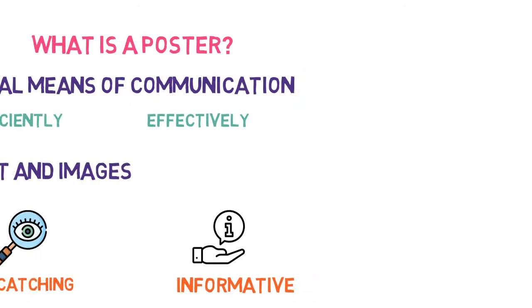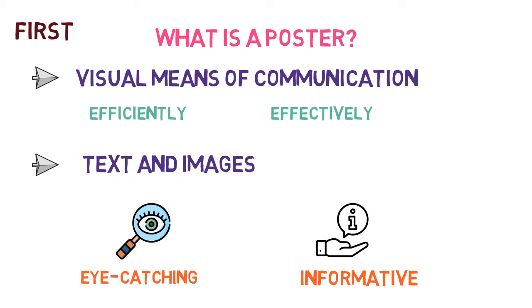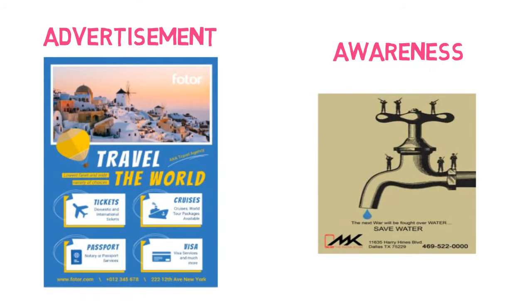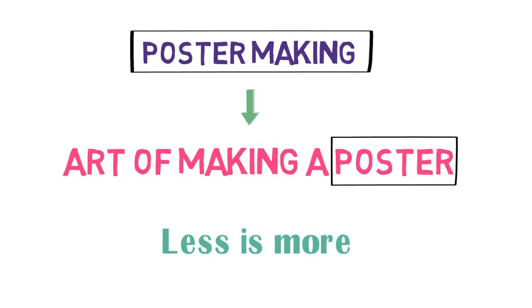That's all in this video. Let's quickly revise what we have learned in this lesson. First, we understood what is a poster. A poster is a visual means of communication used to convey message efficiently and effectively. It is made up of both text and images to make it eye-catching as well as informative. It is used for making an announcement or appeal, issuing a notice, advertising a product, or bringing about awareness on any issue of public interest. The art of making a poster is called Poster Making.